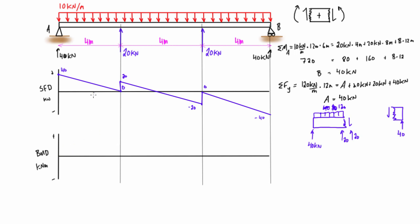For the bending moment diagram, area on the positive side of the shear force diagram gives a change towards the positive direction, and vice versa. The area of the first section is one-half times base times height: half times 4 meters times 40 kilonewtons equals 80 kilonewton-meters of change in magnitude, bringing us upward. Because this is a sloped line on the shear force diagram, we get a parabolic curvature on the bending moment diagram.